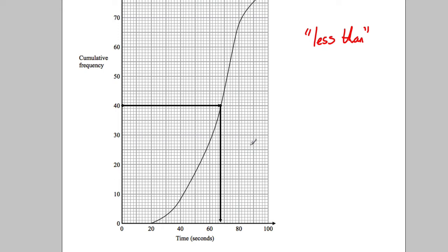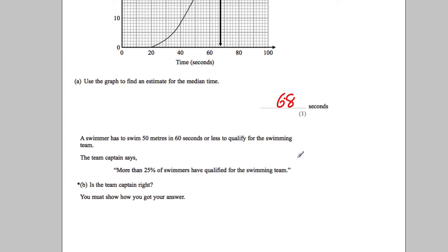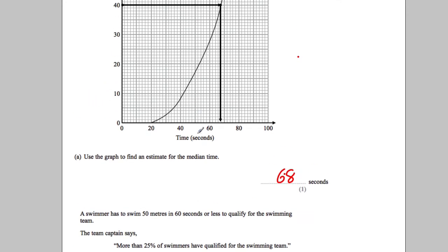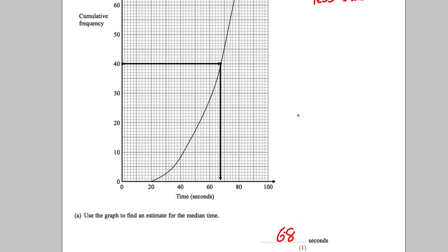So what I'm trying to find here is, a swimmer has to swim 50 meters in 60 seconds or less. So I'm going to draw a line up from 60 seconds and I'm going to read across like that.